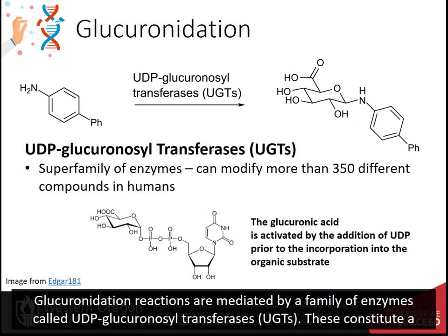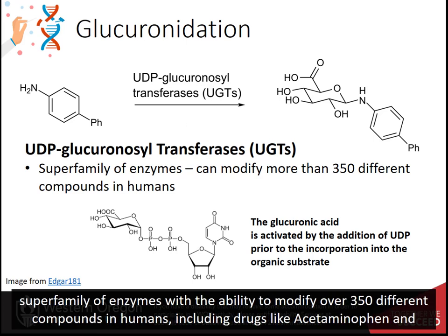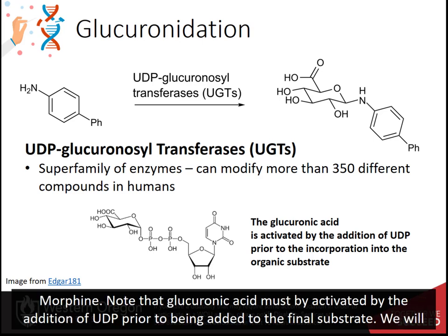Glucuronidation reactions are mediated by a family of enzymes called UDP-glucuronidation transferases, or UGTs. These constitute a superfamily of enzymes with the ability to modify over 350 different compounds in humans, including drugs like acetaminophen and morphine.